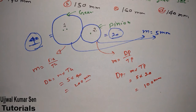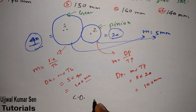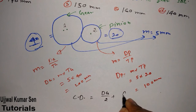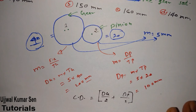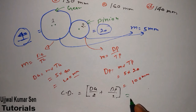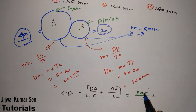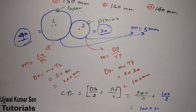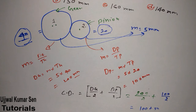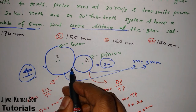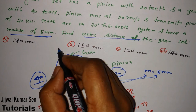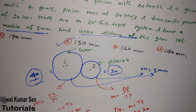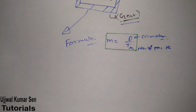Center distance CD = D_gear/2 + D_pinion/2 = 200/2 + 100/2 = 100 + 50 = 150 mm. Therefore, the center distance of this gear and pinion set is 150 mm. Looking at the options, option B is the right answer.